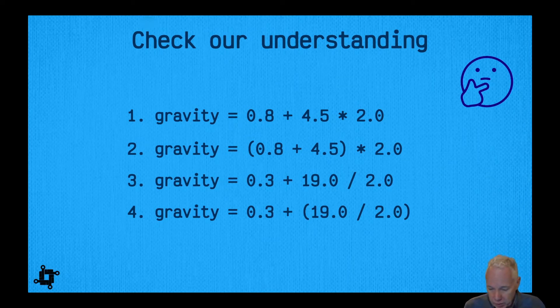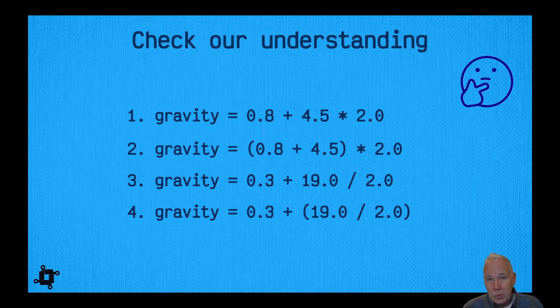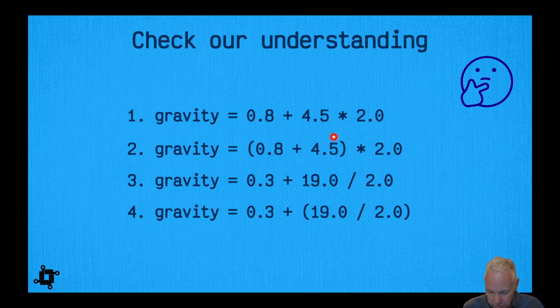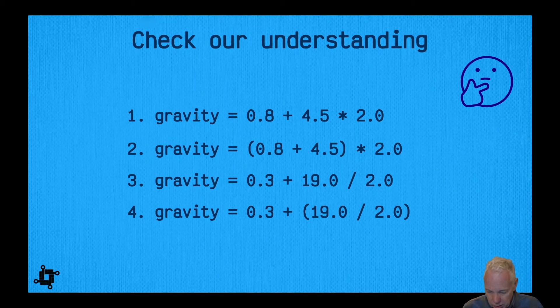Let's just check our understanding and work through these four elements to see if we understand whether it comes up with the right value or not. If we start with the first one, it's saying that we're going to do 4.5 * 2, so that would be 9, and then we would add it to 0.8, and we would end up with 9.8 for the acceleration rate due to gravity, and this is correct, so this one would be good to go. Now the second one is where we've changed the order of precedence here, so by doing this we're at what, 5.3 * 2, which would be 10.6, and that's not the right answer, and so this would change the result.